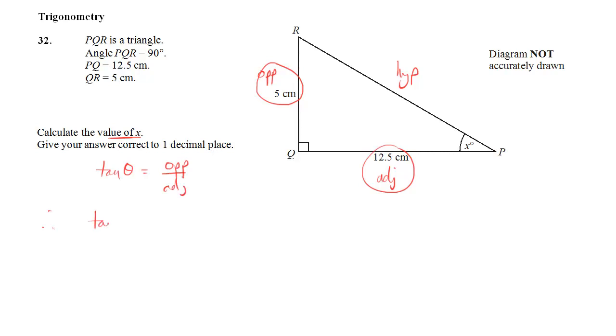So in my case, theta, the angle is X. So tan X is equal to the opposite side, which is 5, divided by the adjacent side, which is 12.5. And whenever you've got tan X, cos X or sin X, you need to use the inverse of that to find the angle.